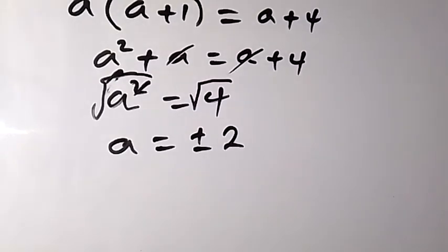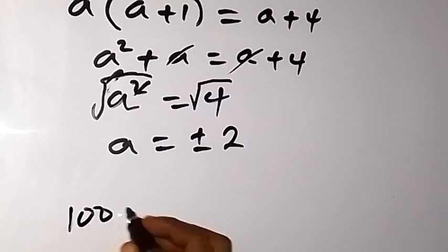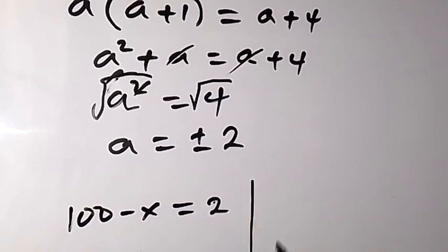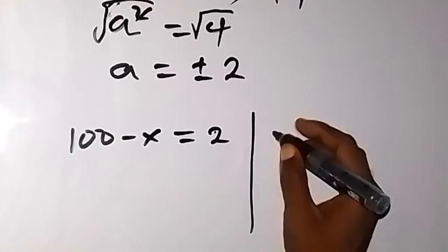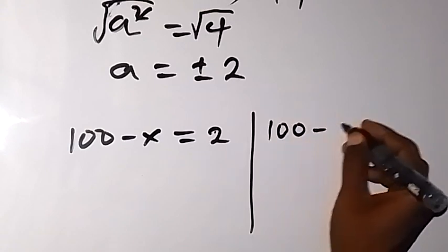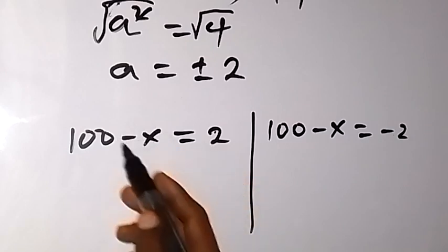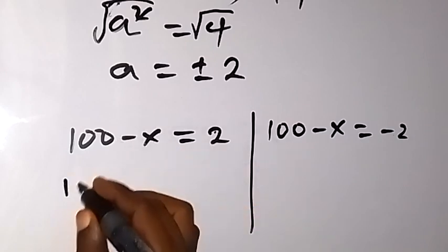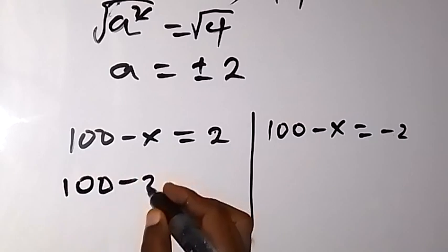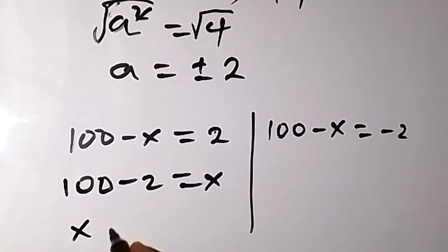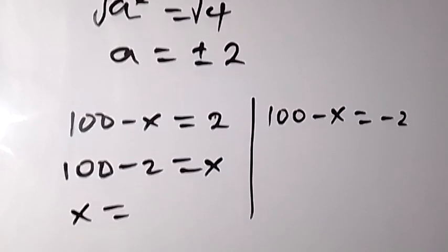Now we have two cases. Our a is (100 - x), so 100 - x equals +2 or -2. For the first case, 100 - x equals -2: taking 2 to the left and -x to the right gives 100 - 2 equals x, so x equals 98.